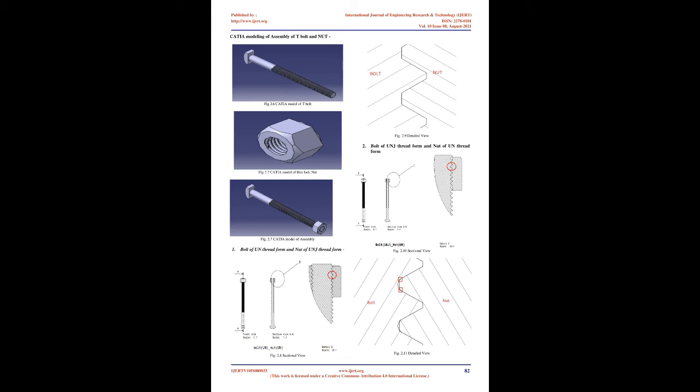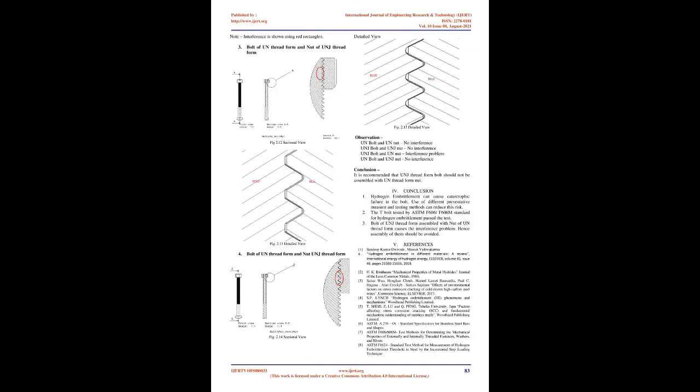F519-18: This test method gives acceptance criteria for coating and plating processes that can cause hydrogen embrittlement in steels. Subsequent exposure to chemicals encountered in service environments, such as fluids, cleaning treatments, or maintenance chemicals that come in contact with the plated/coated or bare surface of the steel, can also be evaluated by this test.